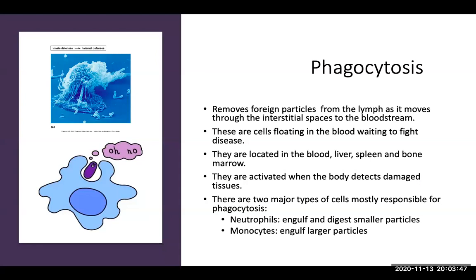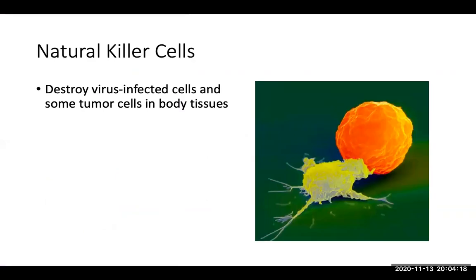Phagocytosis is the removal of foreign particles from the lymph as it moves through the interstitial space to the bloodstream. These phagocytic cells float in the blood waiting to fight disease; they're located in your blood, liver, spleen, and bone marrow, and are activated when the body detects damaged tissues. There are two major types responsible for phagocytosis: neutrophils engulf and digest smaller particles, and monocytes will engulf larger particles. Natural killer cells destroy virus-infected cells and some tumor cells in the body tissue.